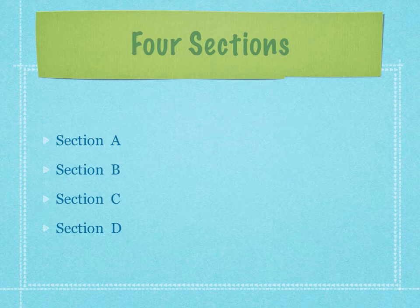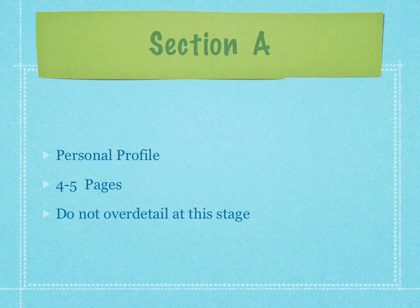Let's look at section A, which is made up of four to five pages. It includes the personal profile of yourself. Don't over-detail at this particular stage — it's only four or five pages — talking about your own history, the profile of where you're up to today in your professional life, and a little bit about yourself in terms of family, education, and history.